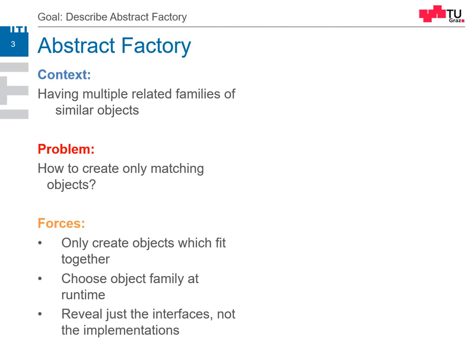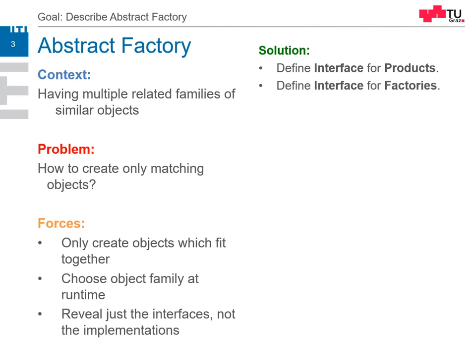So what is the solution? First of all, we have to define the interfaces for the products — for example, connector elements, chairs, screws, and so on. Or think of graphical design: we have to define interfaces for buttons, for text boxes, and so on. These have to have similar interfaces for usage. Then we have to define the interface for the factories — for example, get me a button, create me a text box, create a radio box.